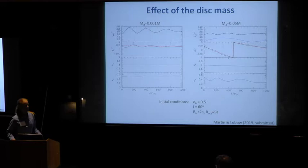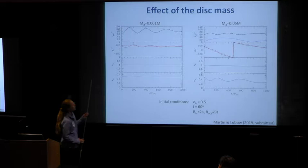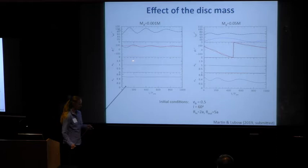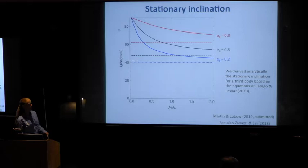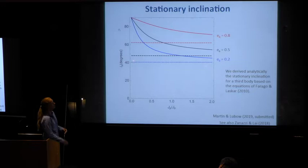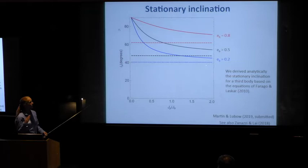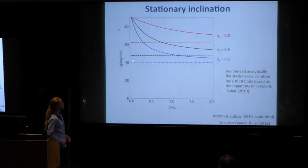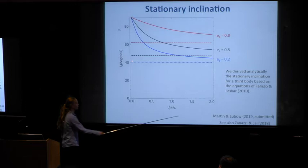We calculated analytically the stationary inclination — the inclination that the system would align to over time. This shows the inclination as a function of the ratio of the angular momentum of a third body compared to the binary. If we increase the angular momentum of the third body, or equivalently the mass of the disk, the stationary inclination decreases, as we saw in the previous simulation. The different colors show three different binary eccentricities. JJ also has a paper on this, solving it numerically.